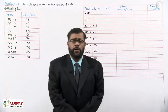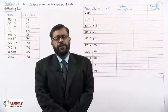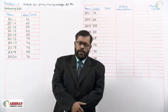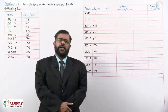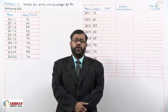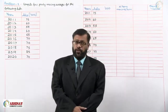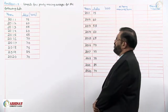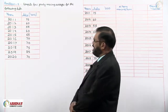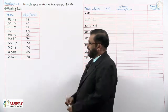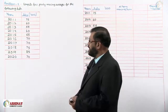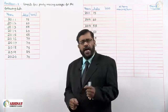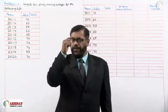In the last session we considered problem seven on five-yearly moving average. In this session we shall take problem number eight on four-yearly moving average. The problem says: compute four-yearly moving averages for the following data — the years and the sales are given.